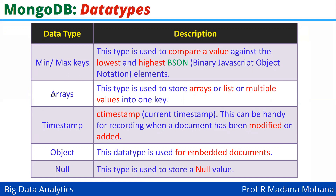The next data type is arrays. This type is used to store arrays or lists or multiple values into one key. The next type is timestamp. By default this stores the current timestamp, which can be handy for recording when a document has been modified or added.